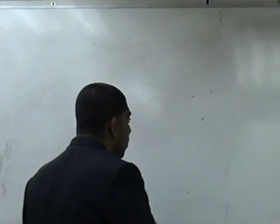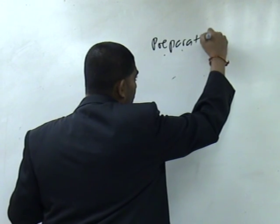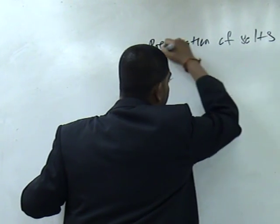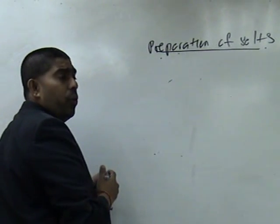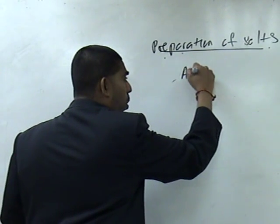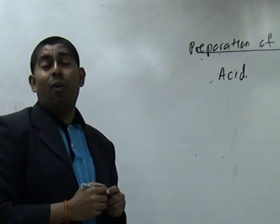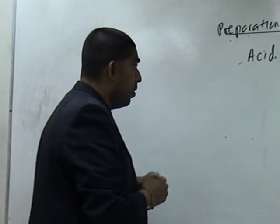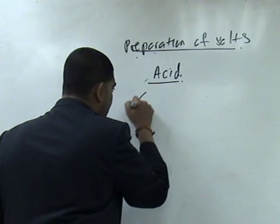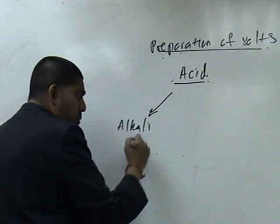So, Preparation of Salts. Now, in my previous video, I have already told you that basically all salts are formed from acid. There are four different ways that we can bring back our salt. Number one, acid plus with alkaline. Number two, acid plus with metal oxide.